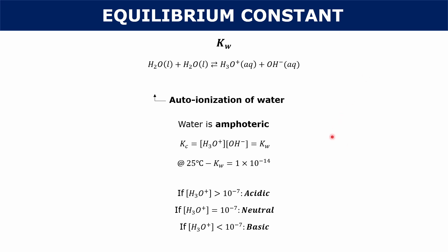So Kw is just the equilibrium constant for that specific reaction, and the value it gives us is helpful — including for a relationship we'll get to at the end.